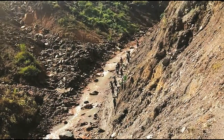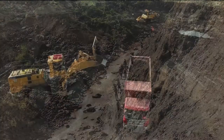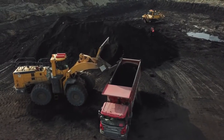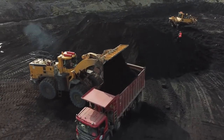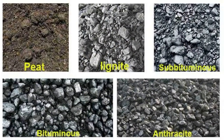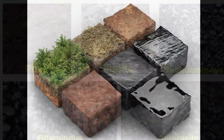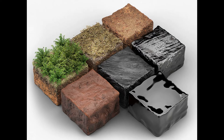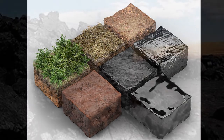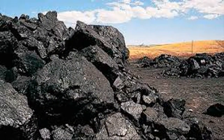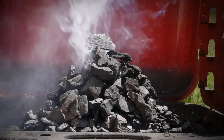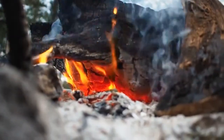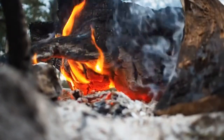Continued burial resulting in increasing pressures and temperatures causes this low-quality lignite coal to be transformed into higher-quality black coals. First, lignite becomes sub-bituminous coal, then bituminous coal, and finally the highest quality, which is known as anthracite coal. As these transformations occur, the amount of water and other compounds in the coal decreases, and the coal becomes more dense with a higher carbon concentration.